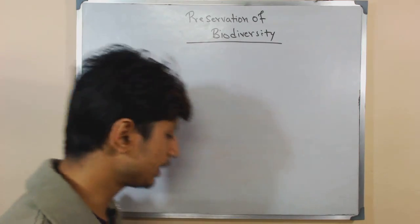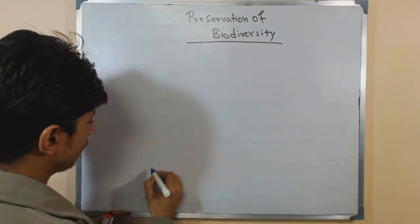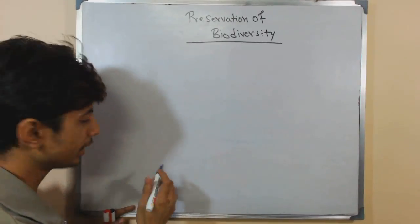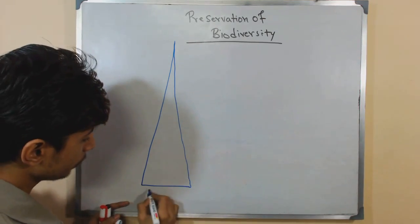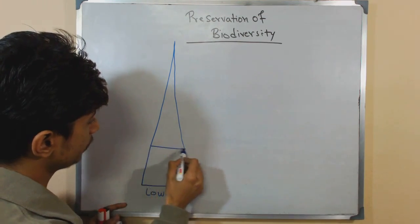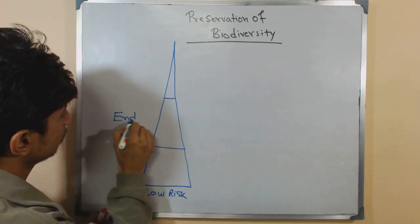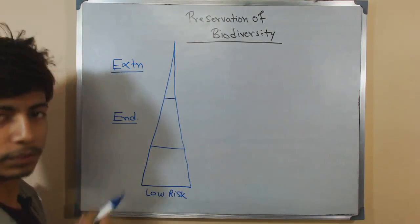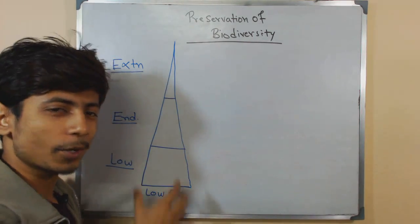Let's begin with the scale of extinction. If I draw the scale, we begin from the least concerned species at the base — broad at the bottom — going up to the very rare or extinct at the top. So in the bottom we have low risk individuals, in the middle we have endangered individuals, and at the top we have extinct individuals.